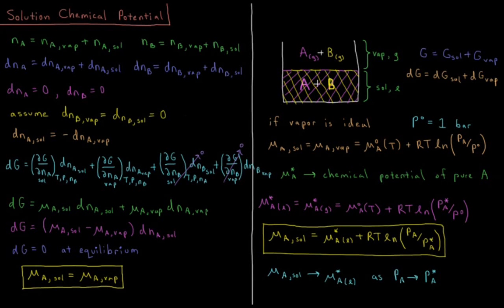This video will discuss the chemical potential of species in a liquid-liquid solution. We have a system with two components, A and B, mixed together in a liquid solution — their state indicated as L or sol for liquid and solution. Above this solution, there is the vapor of each component: gas particles of A and gas particles of B, indicated by G or vapor for the gas and vapor phase.